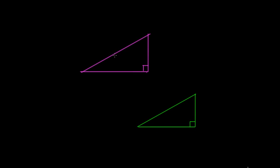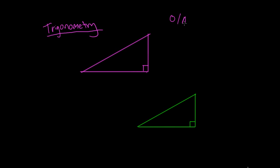Hey guys, so in this video we're going to be having a look at how we define a triangle when we're going to do some trigonometry. We've probably looked at things like the opposite side, the adjacent side and the hypotenuse. In this video we're just going to look at how we actually define these, what they are, because it's pretty important when we're doing trigonometry to know how our sides are defined.